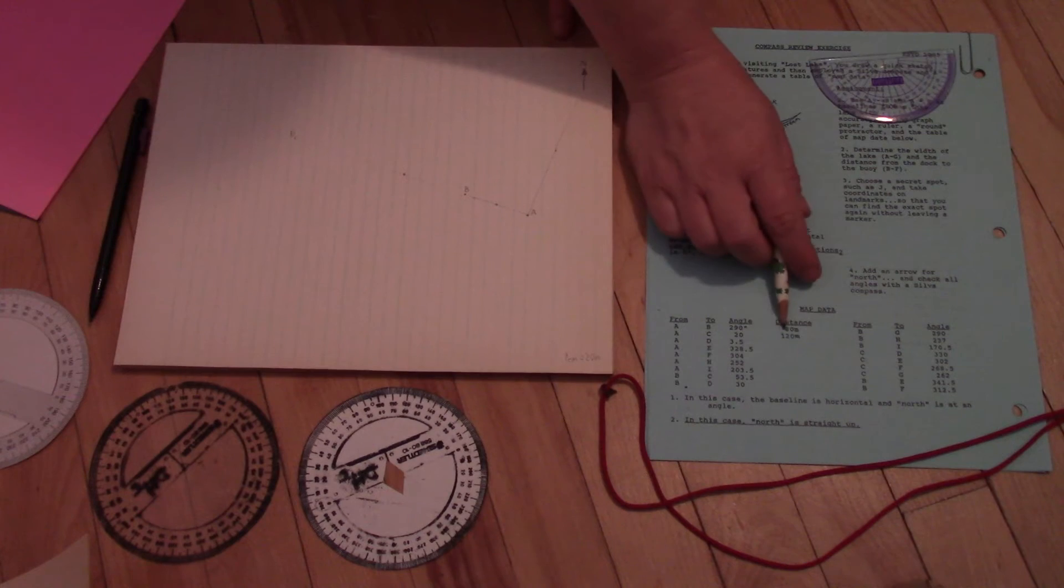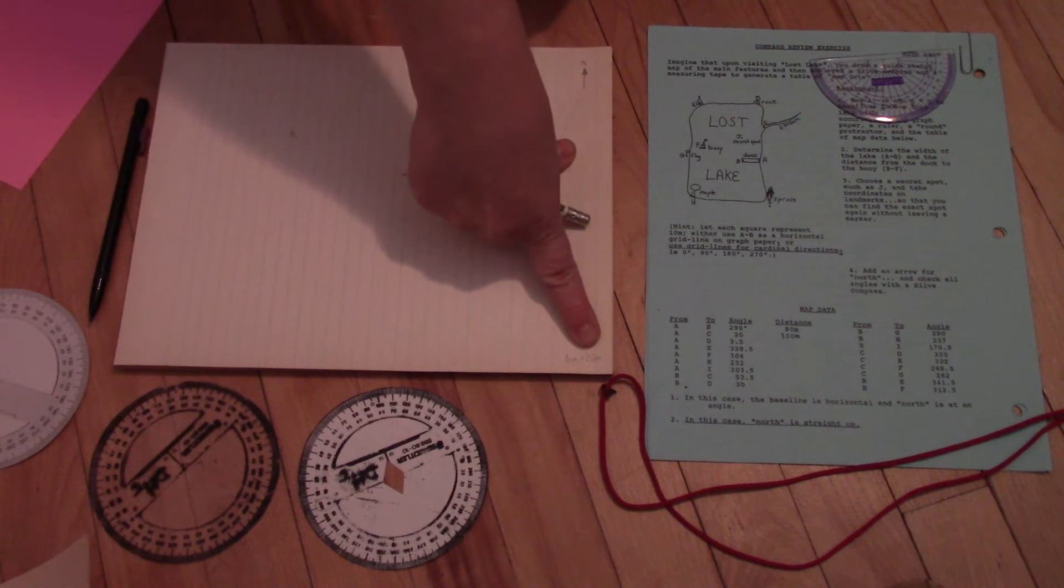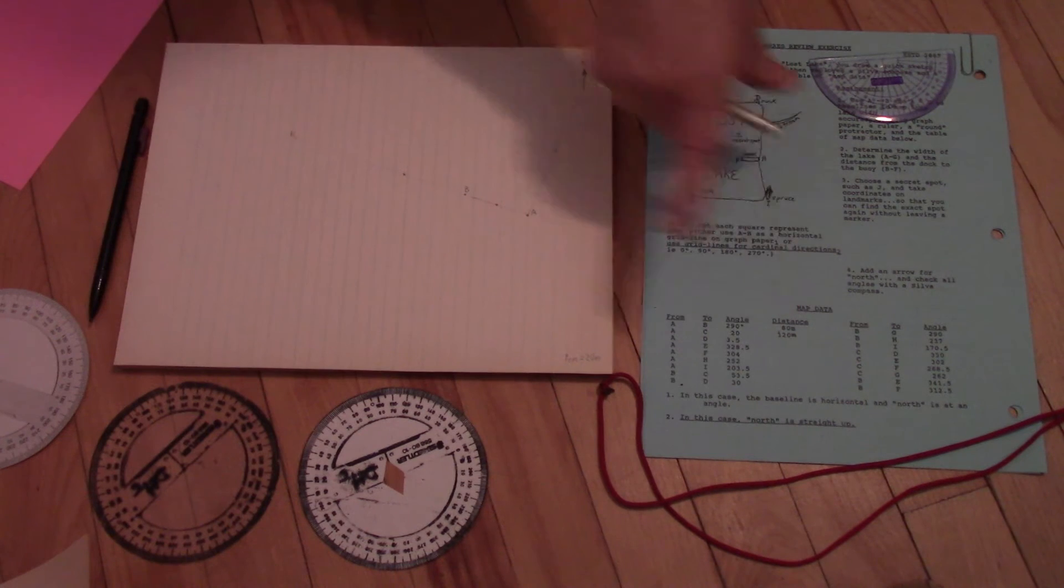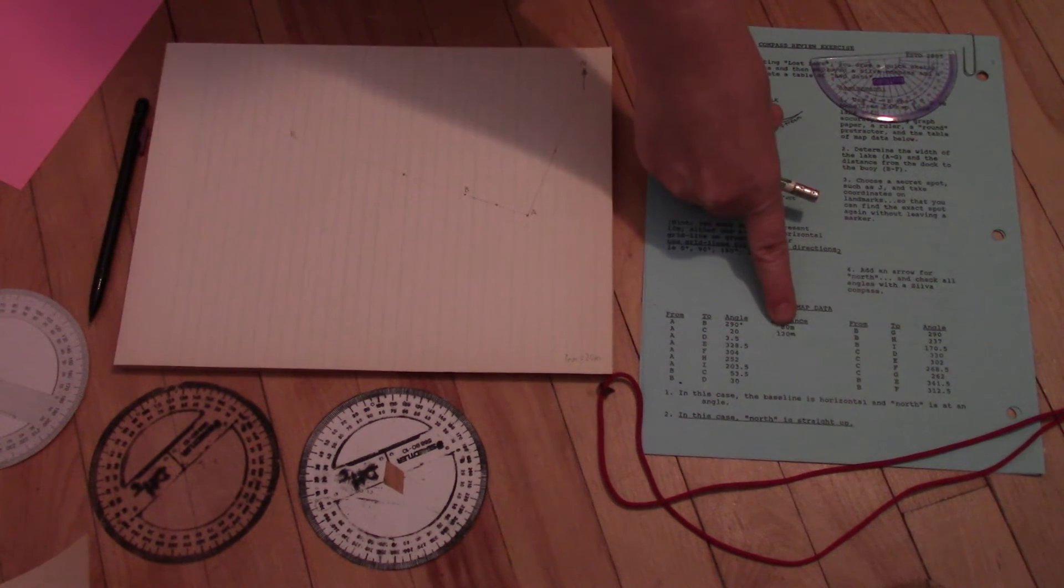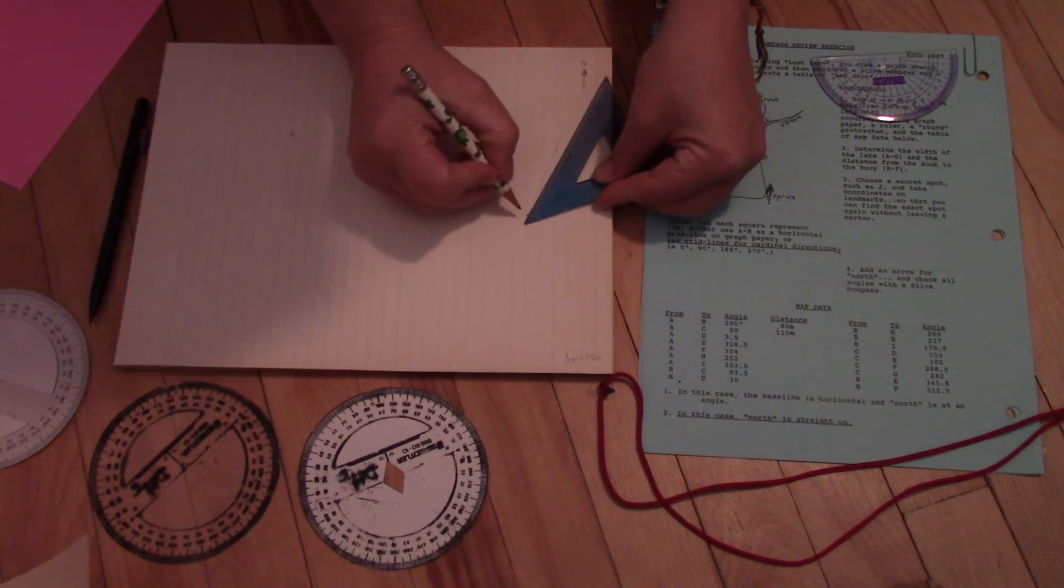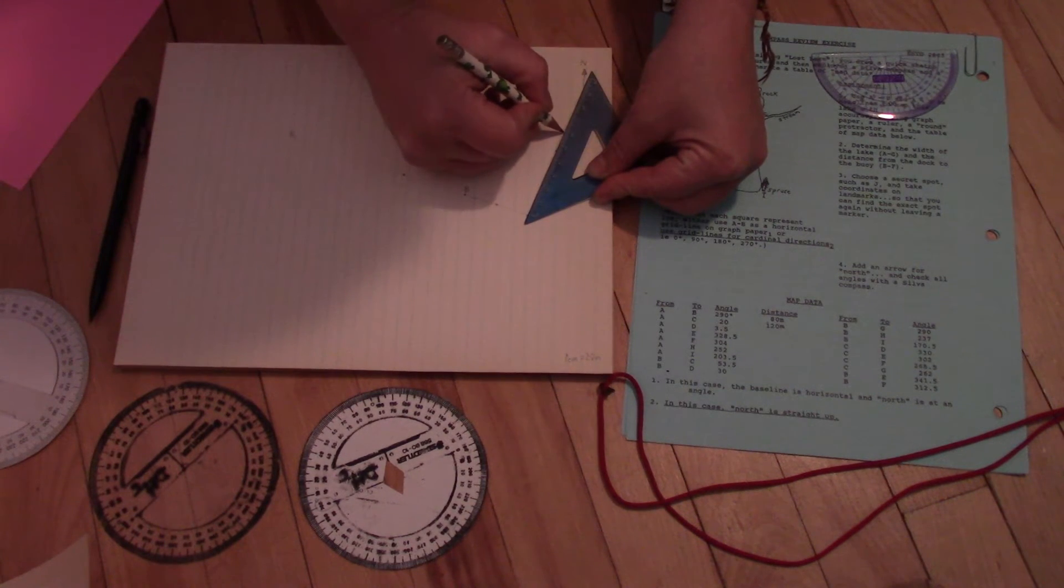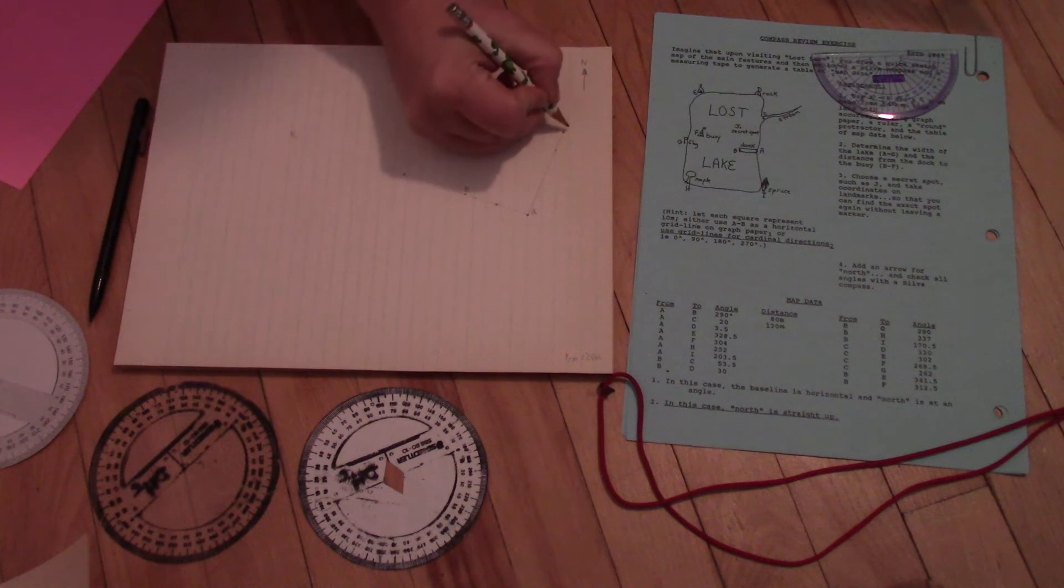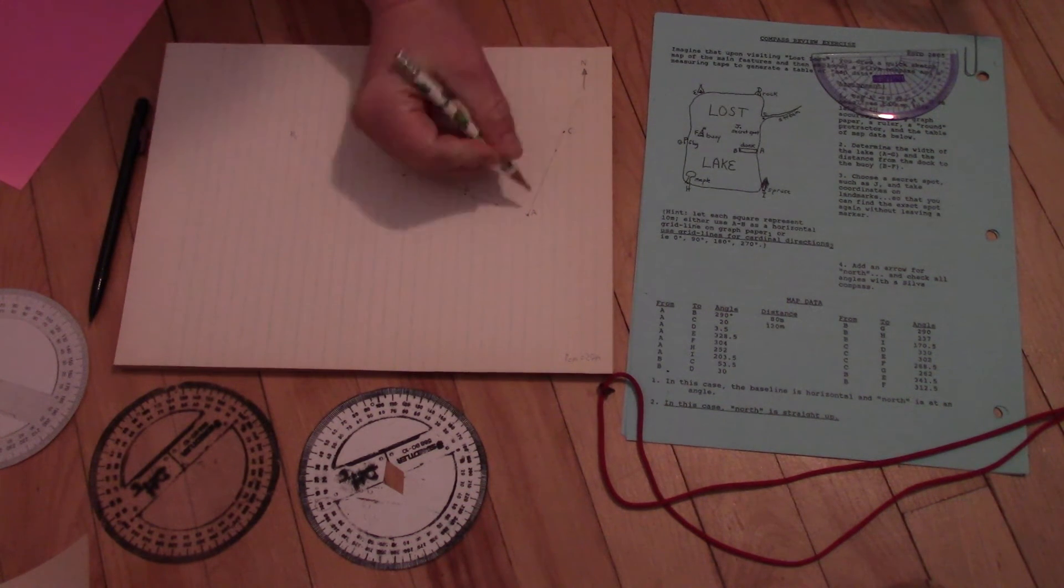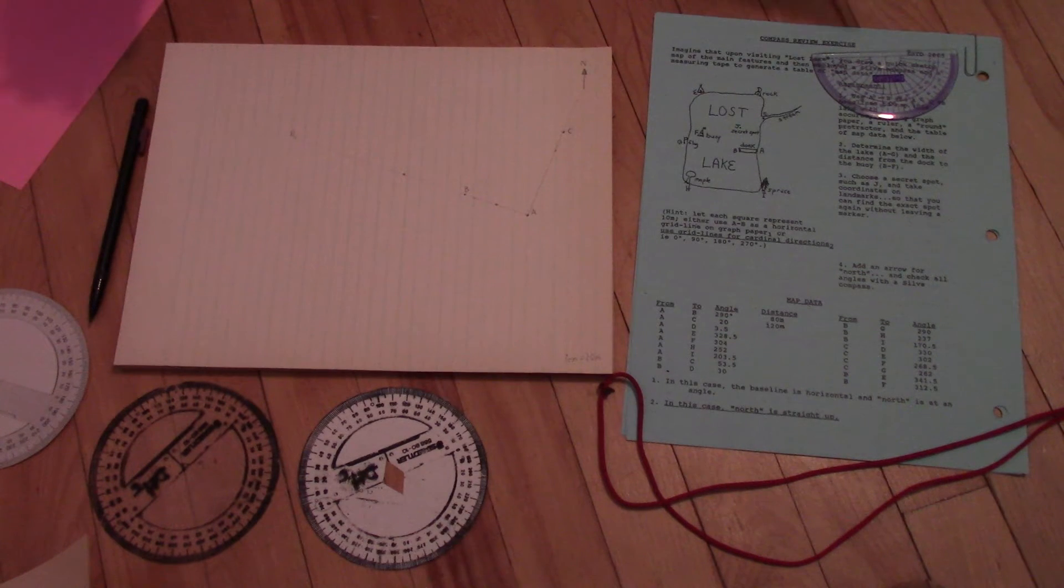Okay, we have A to C is 120 meters. So we said that each centimeter equals 20 meters, which means when we did 80 meters, we only went four centimeters. So if we're doing 120 meters, we're only going to go six centimeters. So here's C. Now with my A, B, and C, I'm hoping I have room for the rest of my map on here, I might have to start again with my point A slightly different. But we're going to keep moving on to different points.